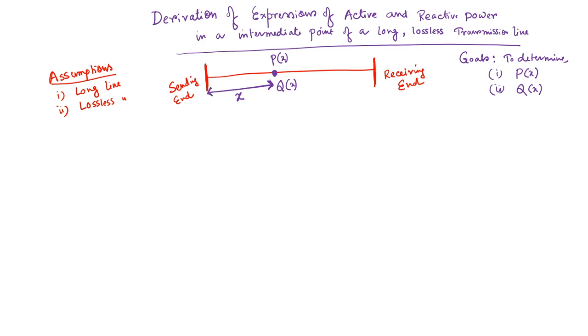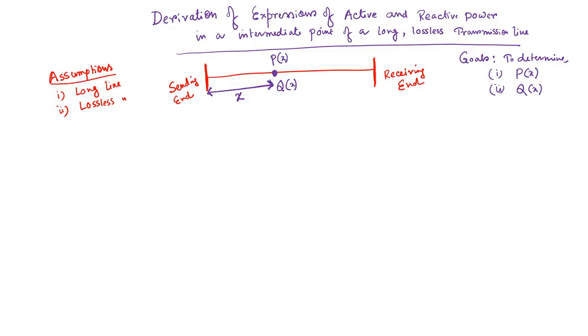Once we derive the expressions P(x) and Q(x), they represent a generalized expression for active and reactive power. We can then apply boundary conditions: when x equals 0, P(x) represents the active power at the sending end. When x equals L, P(x) represents the active power at the receiving end, provided the line length is L meters or L kilometers.